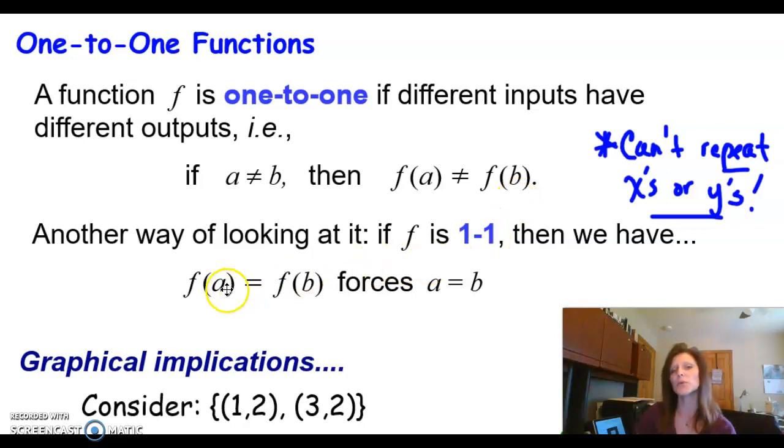Another way of saying this, and we will use this in another unit, is that if my two answers are equal, that means the x's that I put in must have been equal. That's called the one-to-one property. The key here for one-to-one is you can't repeat x and you can't repeat y.